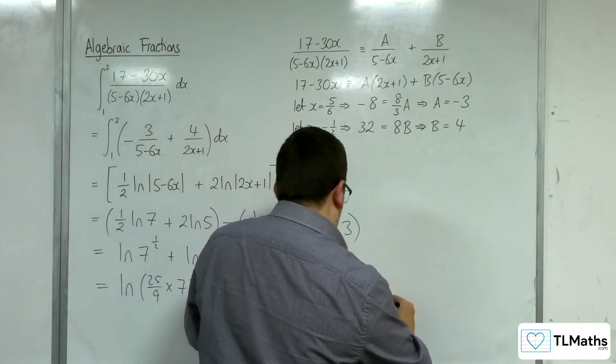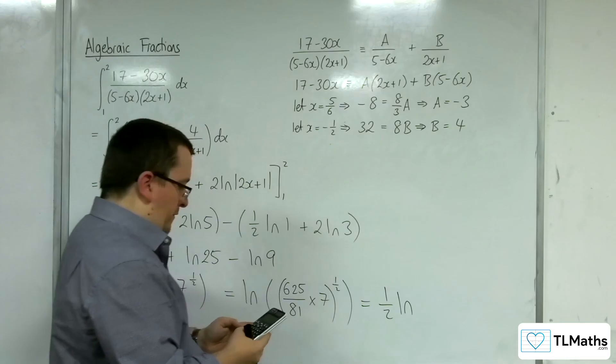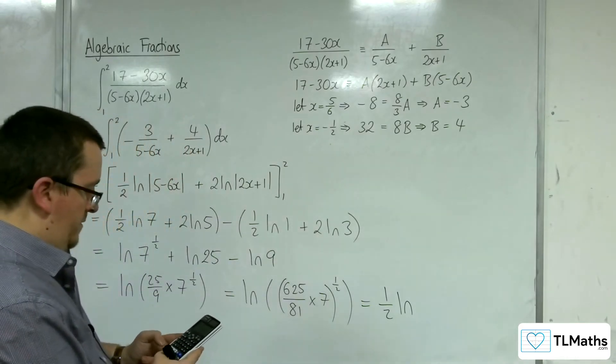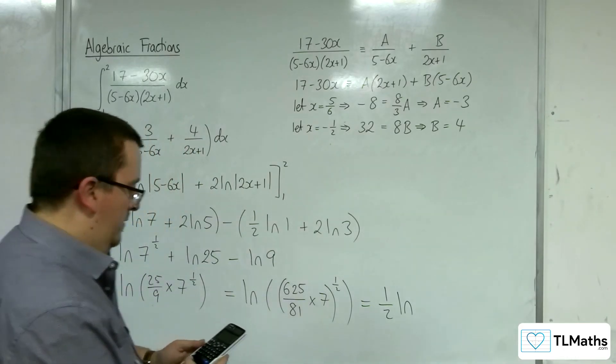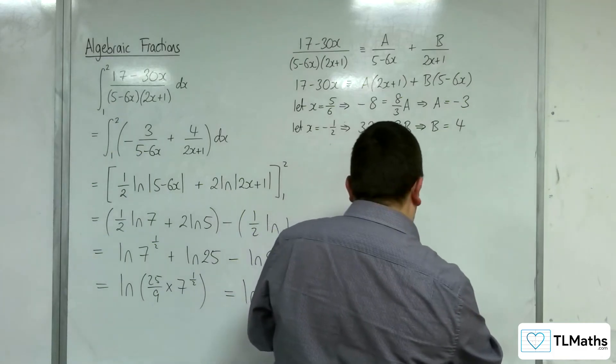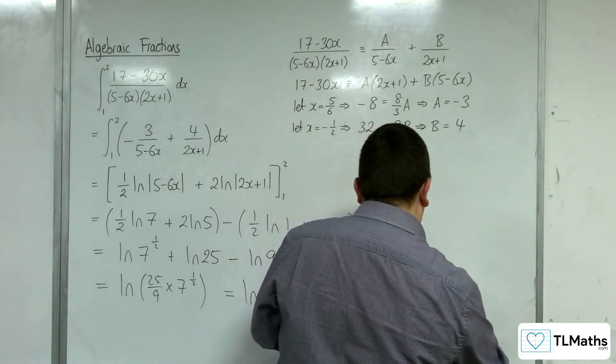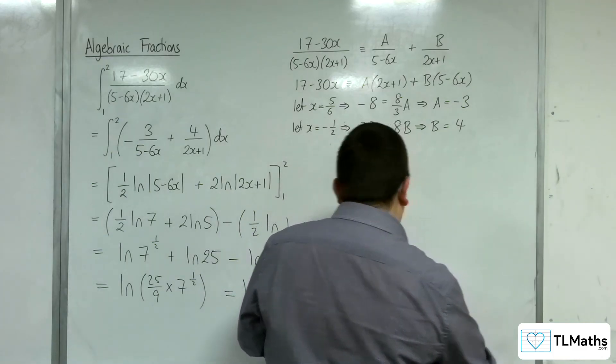So, I can bring the half out the front of the logarithm. Now, I've got the 625 times 7 over 81. So, 4, 3, 7, 5 over 81.